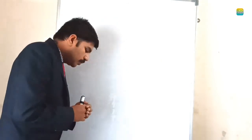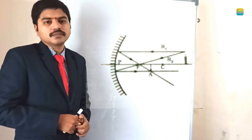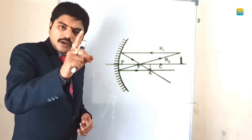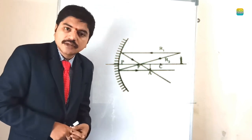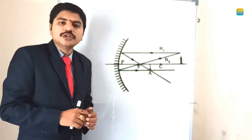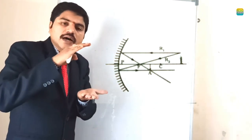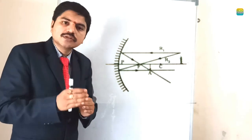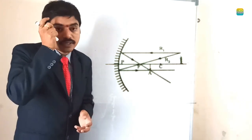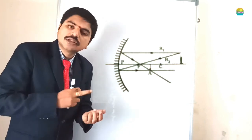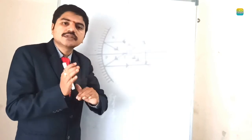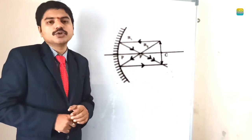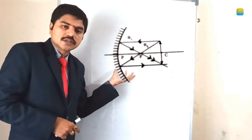If the object is kept beyond the centre of curvature, the image forms between F and C, and it is inverted and diminished. Diminished means the height of the image is less than the object — the image height is lower than the object. So the image is real, inverted, and diminished. These are the different conditions — different object positions give different types of images with different characteristics.